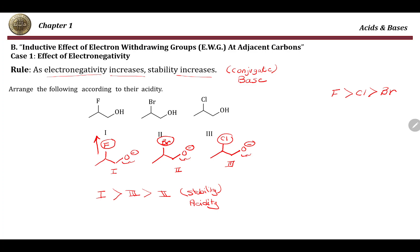However, pay attention to a common mistake: students assume that since fluorine, chlorine, and bromine are in the same column of the periodic table, they must use the size rule. This is true only if the negative charge is at fluorine, chlorine, or bromine. In this case, the negative charge is at oxygen, and fluorine, chlorine, or bromine are adjacent to it. When different elements are next to the negative charge but the charge is not on them, we use the electronegativity rule, not the size rule.